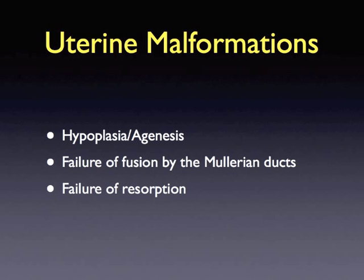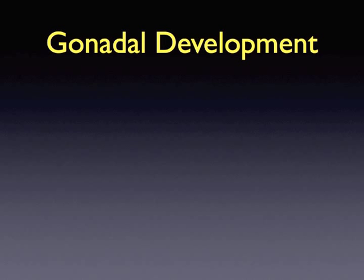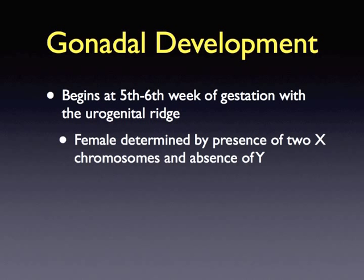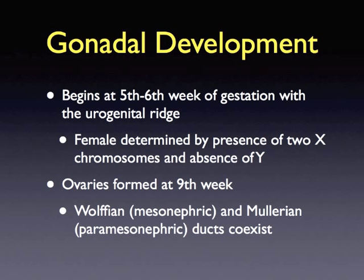Detection and treatment differs for each of the anomalies. The development of the gonadal system begins at the fifth to sixth week's gestation with the appearance of the urogenital ridge. Female development is determined by the presence of two X chromosomes and the absence of a Y chromosome. At approximately the ninth week of gestation, the ovaries are formed and the Wolffian or mesonephric and Müllerian or paramesonephric ducts coexist.